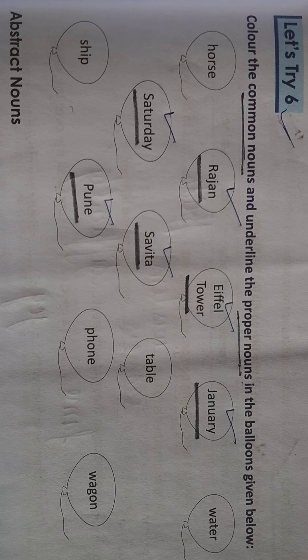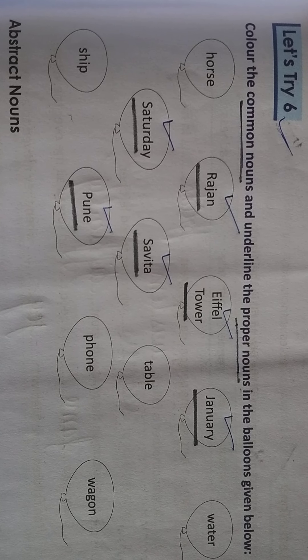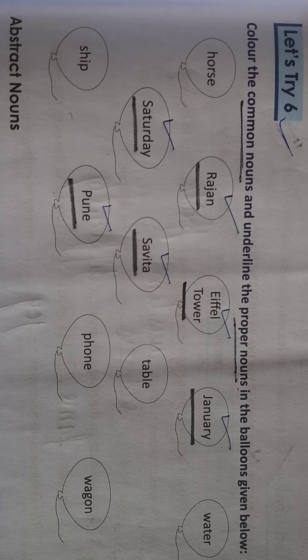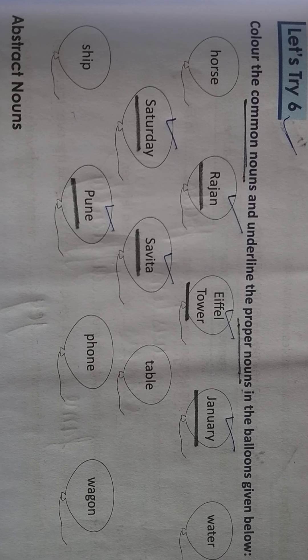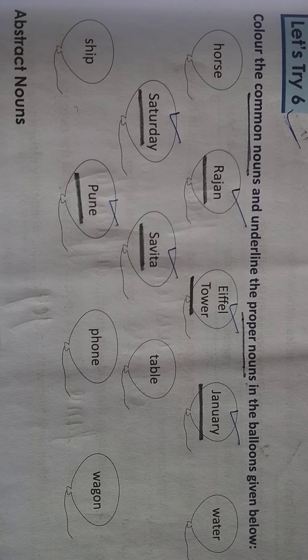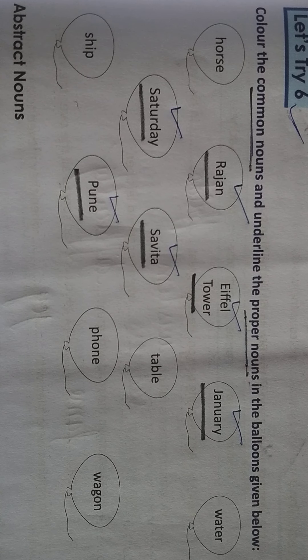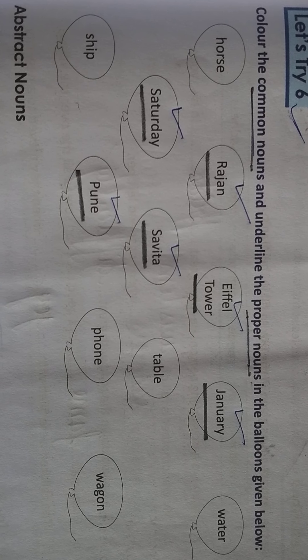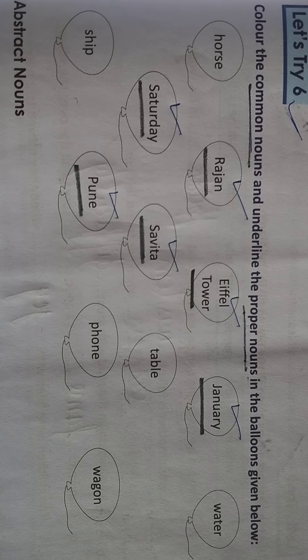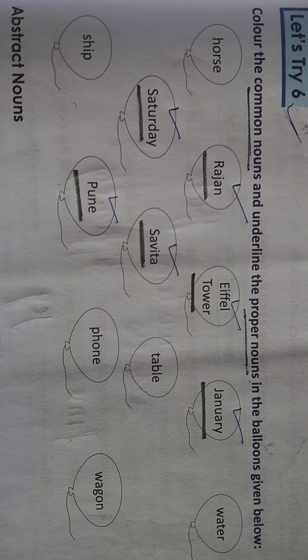Horse — the first letter is small, so it is a common noun, and you will colour it. Rajan is the name of a specific person, and R is a capital letter, so it is a proper noun. Eiffel Tower is also a proper noun.